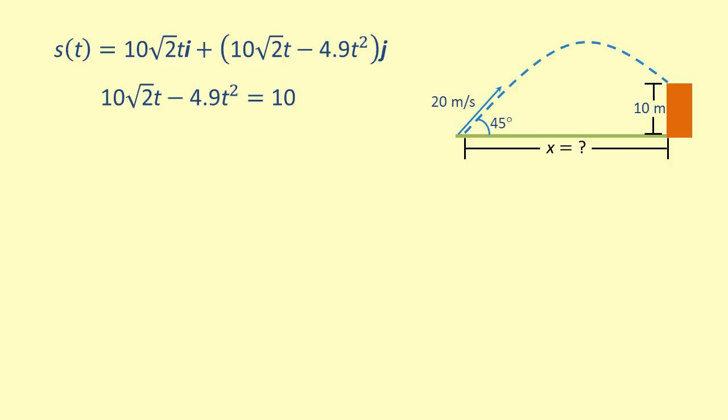Notice that we have a quadratic equation, so let's get all the terms on one side of the equation. This equation is not factorable, so we'll use the quadratic formula to find the roots. We have 10√2 plus or minus the square root of 10√2 squared minus 4 times 4.9 times 10, all over 2 times 4.9.